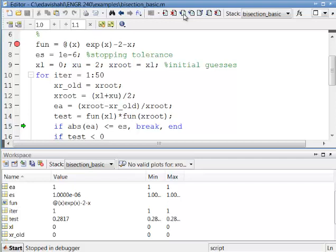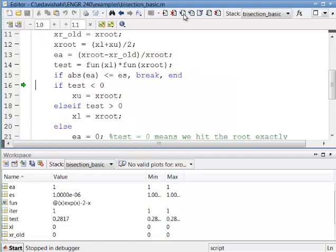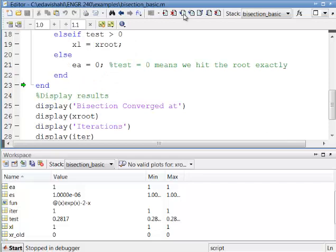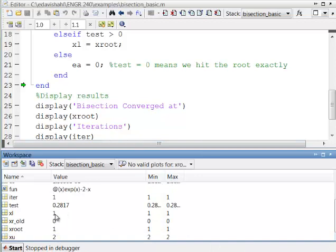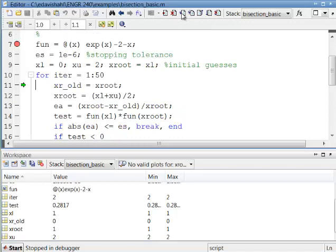We check to see whether we have met our stopping criterion. Here we will generate our new bracket and we see that test is greater than 0, so the lower end of the bracket will become our root value. Now we are moving to our next bracket and if we look down in the workspace, we will see now xl = 1 and xu = 2. So now we are at the bracket between 1 and 2 and we are about to start our next iteration.